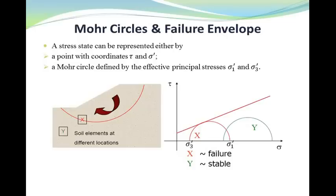Mohr circles. Any stress state can be represented by Coulomb equation, as I mentioned before. And also, a Mohr circle, which is here or here, can be defined by the total or effective principal stresses sigma_1 and sigma_3. We can draw Mohr circles for different test conditions. For example, if the combination of stresses touches the failure envelope, the element will fail, as shown here for element X.